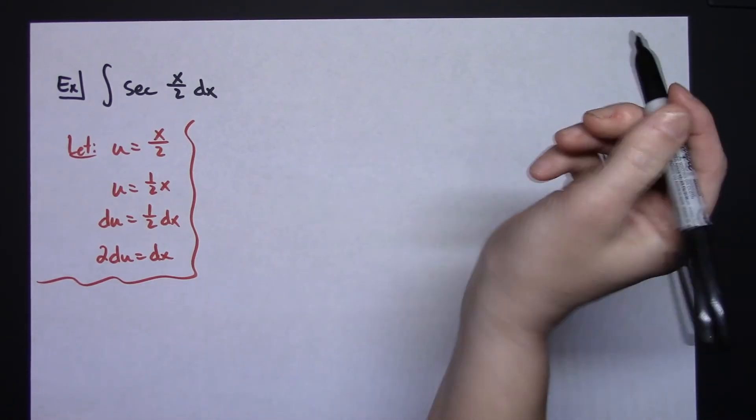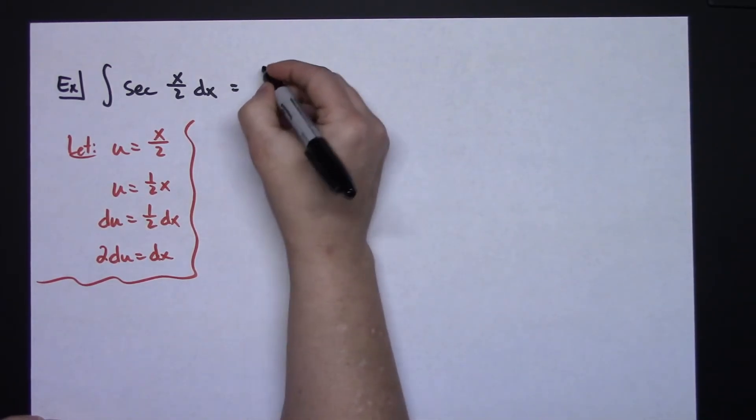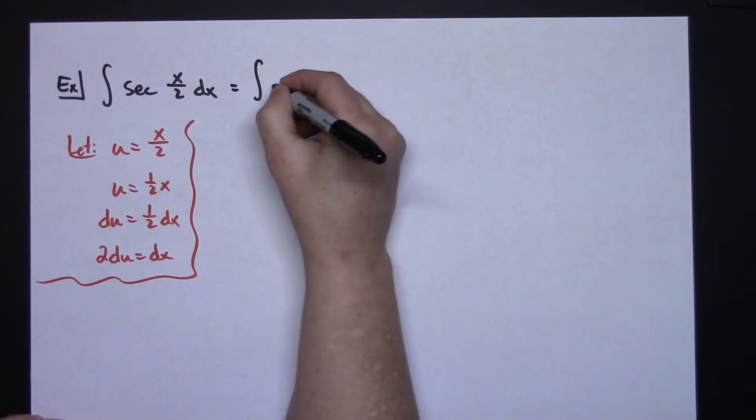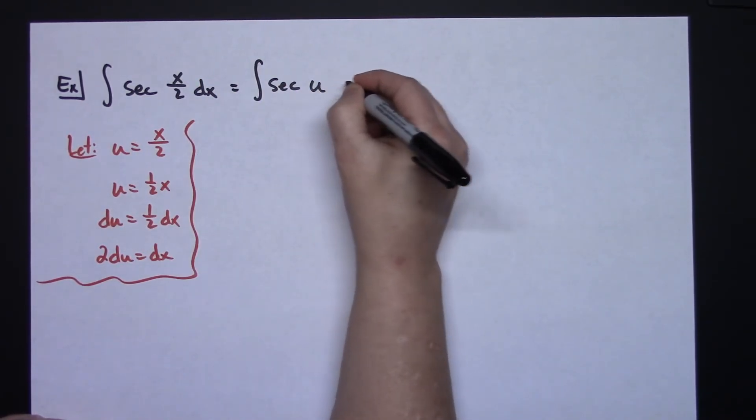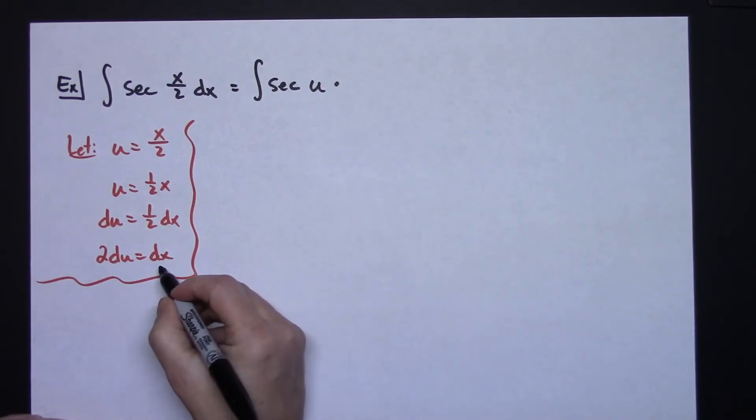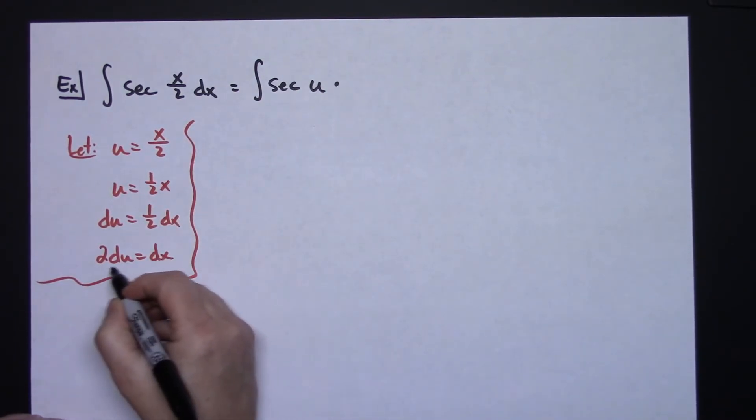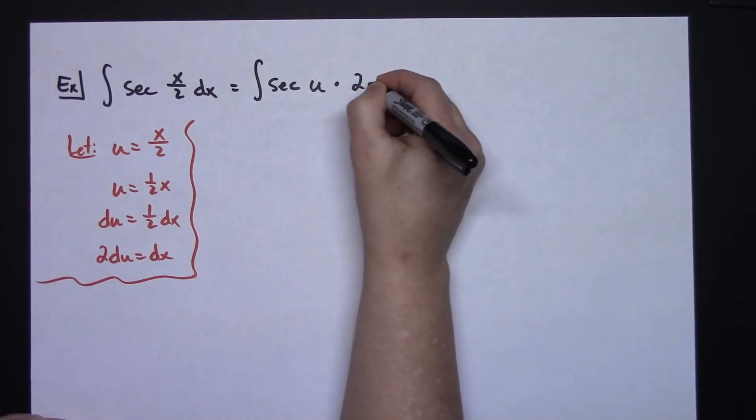Now continuing on I'm going to come up here and see what I can substitute in. Secant is going to stay the same. My x over 2 we said was u, and then replacing the dx with what that equals would be 2 du.